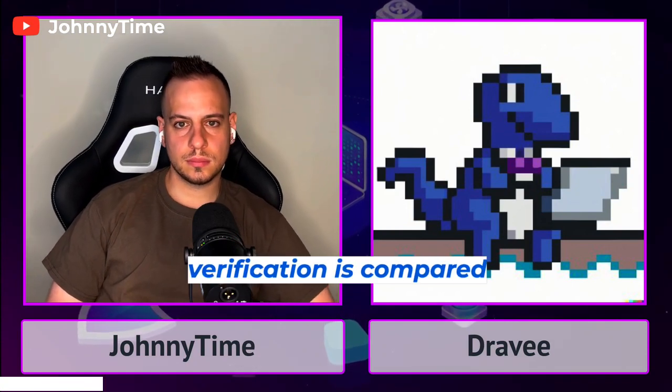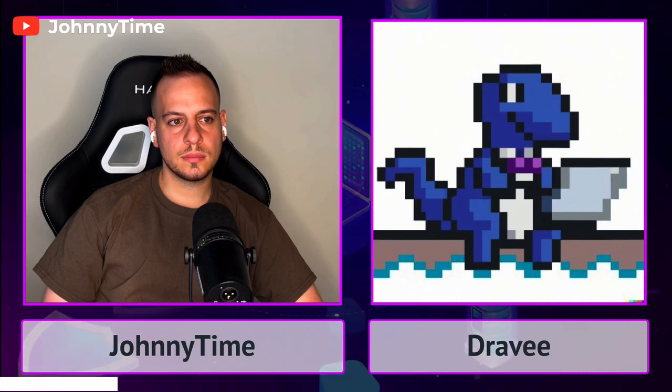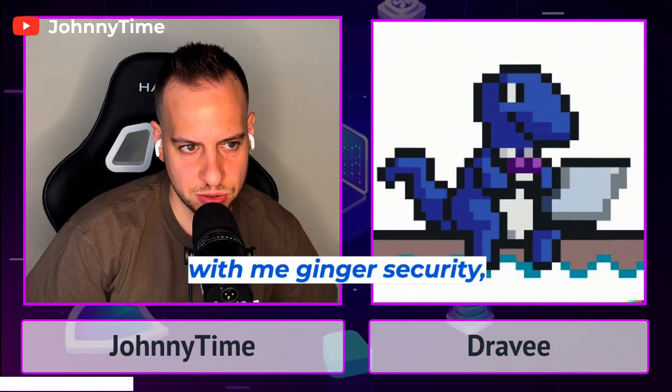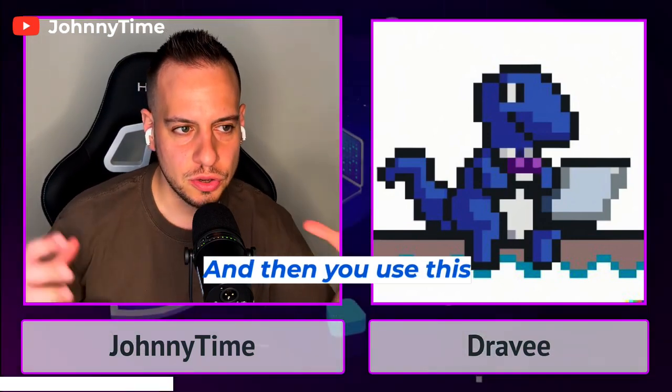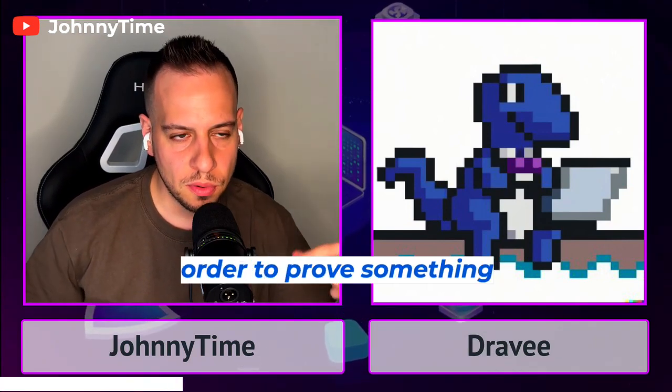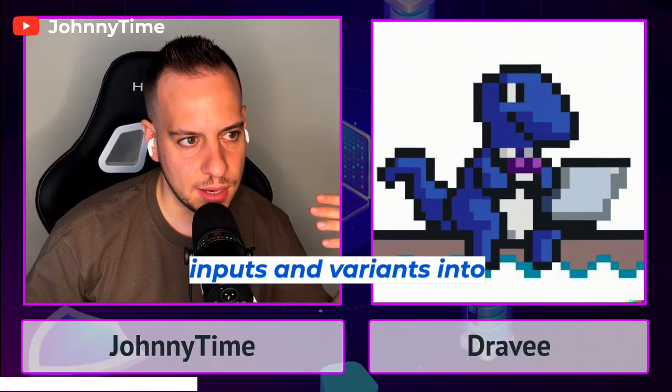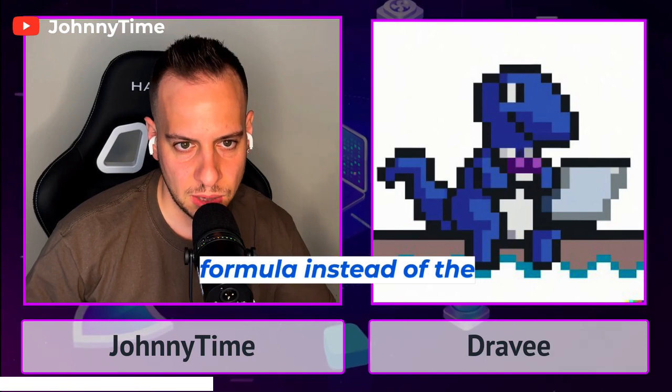Formal verification is a bit complicated to explain compared to fuzzing, but let's say it's more powerful and also more resource consuming. Gershon, the co-founder who founded Ginger Security with me, tried to explain it in one sentence: imagine you take the Solidity or Cairo code, and for every function you make a mathematical equation that represents it. Then instead of fuzzing the code directly and throwing different inputs into the function, you convert it into a math formula and test that formula instead of the code itself.